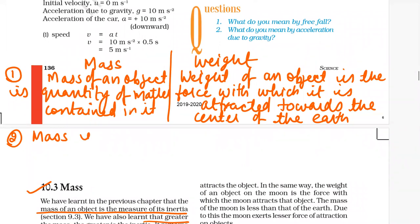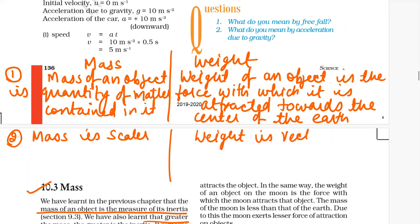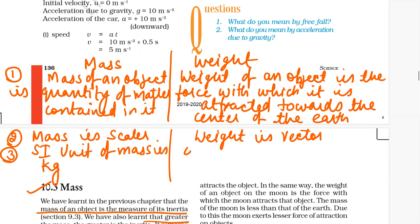Mass is a scalar quantity. Scalar means it has only magnitude. Weight is a vector quantity — it has both magnitude and direction. The SI unit of mass is kg, and the SI unit of weight is Newton.